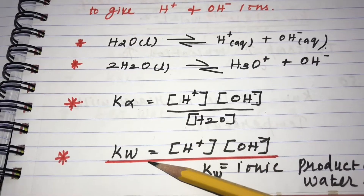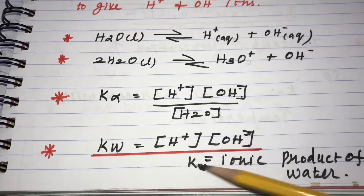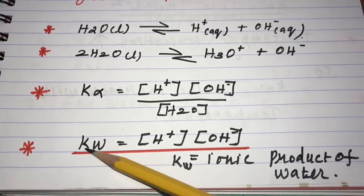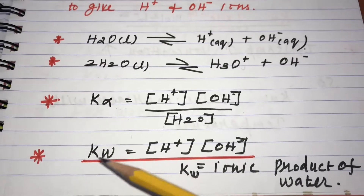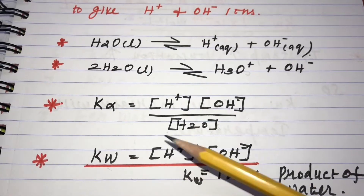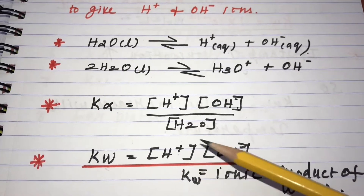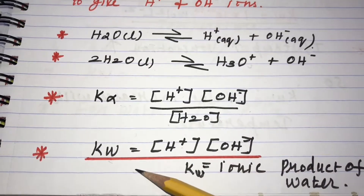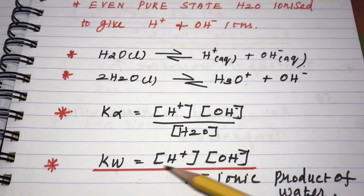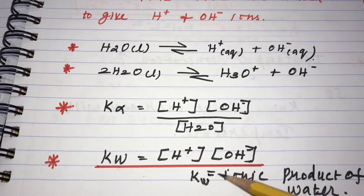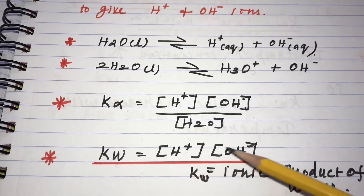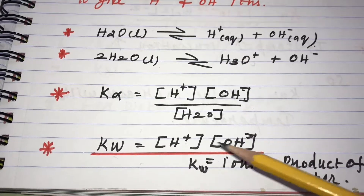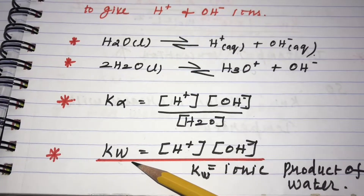The resulting constant is called Kw — the ionic product of water. The ionic product of water, Kw, is defined as the product of the concentration of hydronium ion and hydroxyl ion in solution.